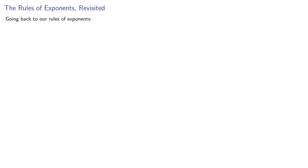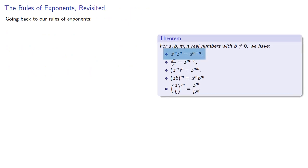If we go back to our rules of exponents, a to the m times a to the n is a product. So if you have a product, add the exponents. Here, a to the m over a to the n, that's a quotient. If you have a quotient, subtract the exponents.